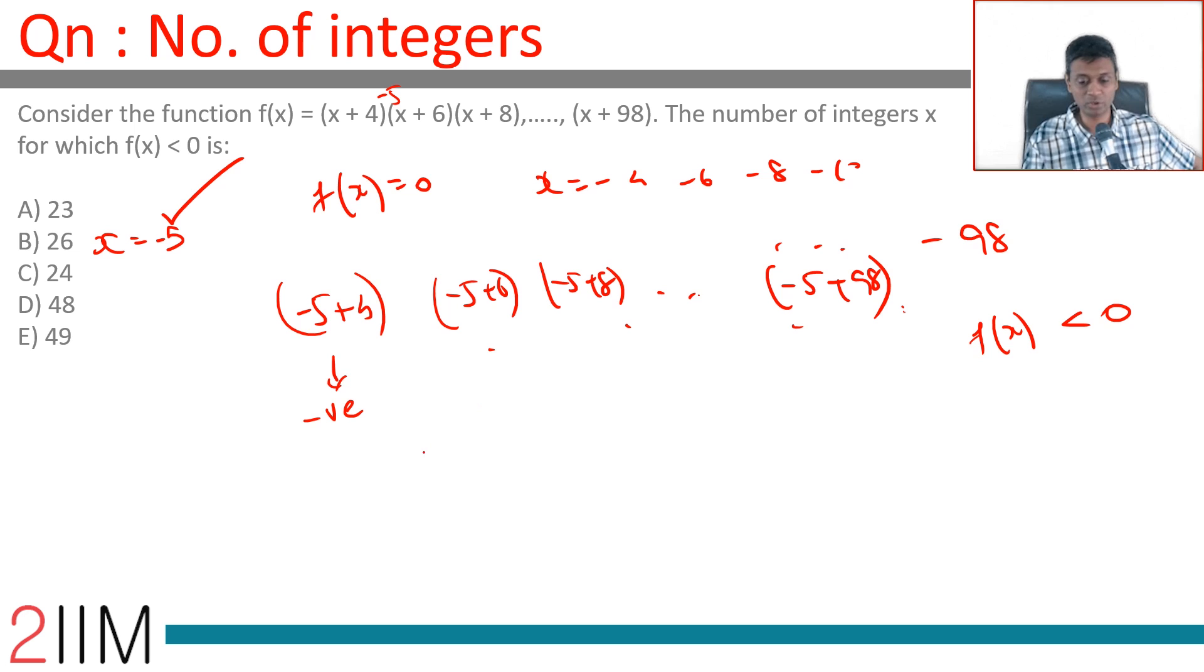-6 makes it 0. Let us put x equal to -7. We put x as -7. This term is negative, this term is negative. Everything else is positive. Two negative terms will multiply to give a positive term. x equal to -7 does not work.